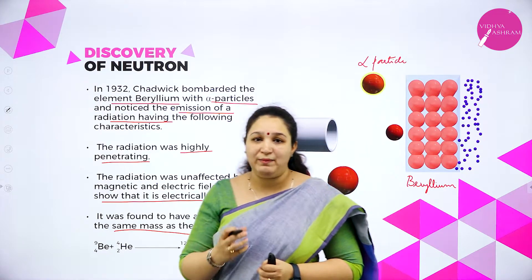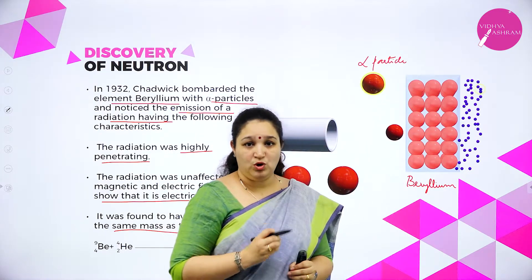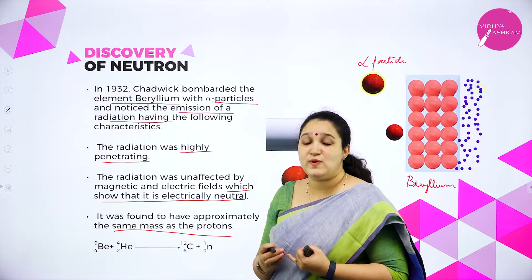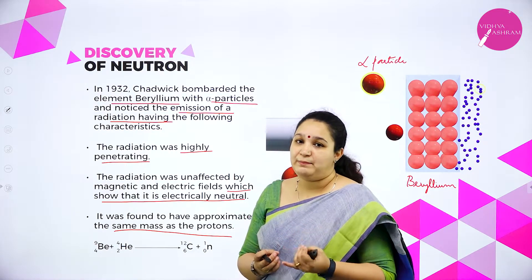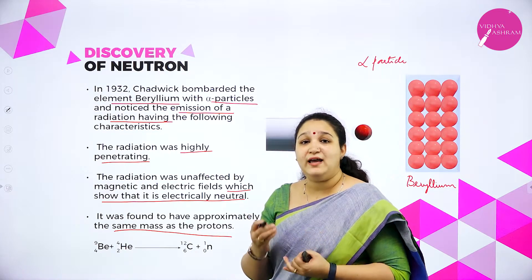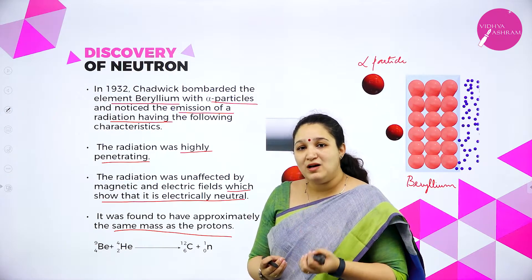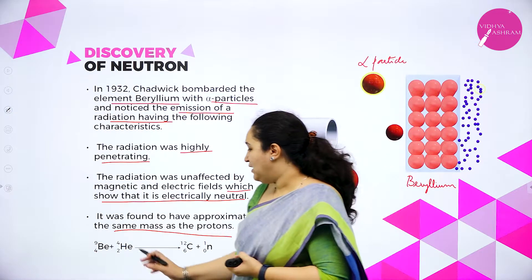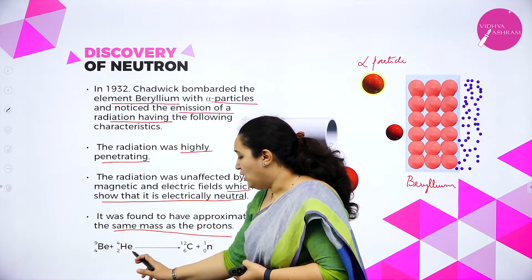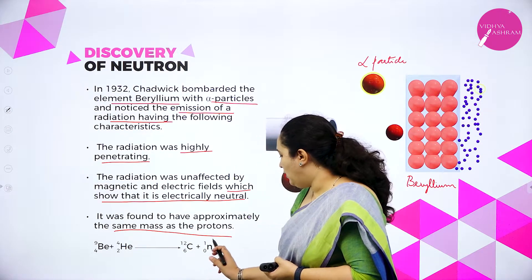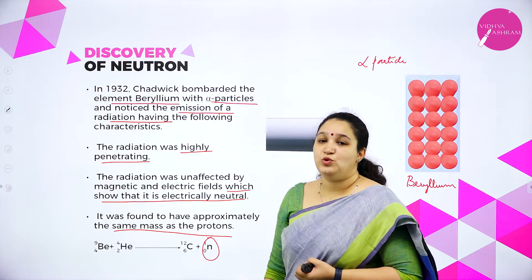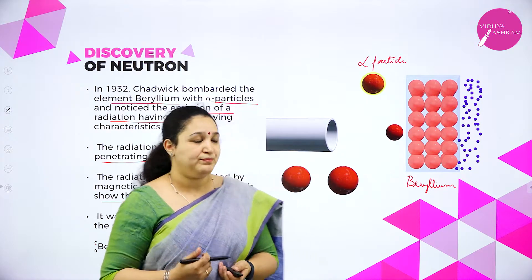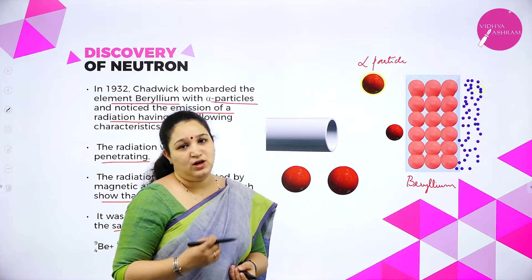The particles which were emitted were named as neutrons, and these neutron particles do not carry any charge. That's why they are unaffected by electric and magnetic fields. They have high penetrating power and also the mass of neutrons is almost the same as that of protons. Beryllium bombarded with alpha particles gives neutrons — that is about discovery of neutrons.